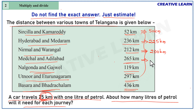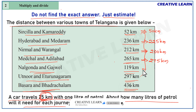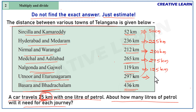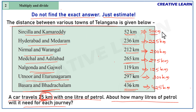265 kilometers is nearer to 275 kilometers. 275 is nearer to 300 kilometers. And 436 is nearer to 425 kilometers. Now we can simply calculate: the car travels 25 kilometers with one liter of petrol, so for 50 kilometers, how much fuel is needed?